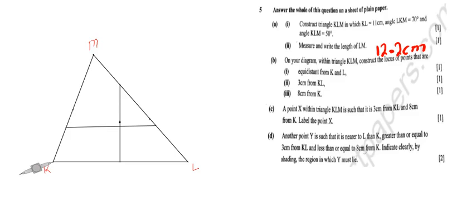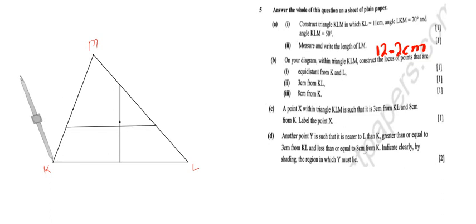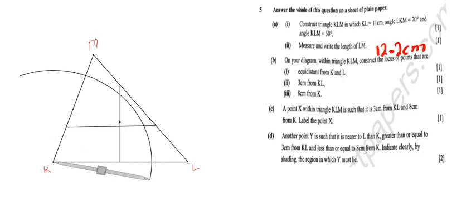The third locus in part B is 8 centimeters from K. I open my compass to exactly 8 centimeters, pin it at K, and draw an arc. That arc represents all points 8 centimeters from K.